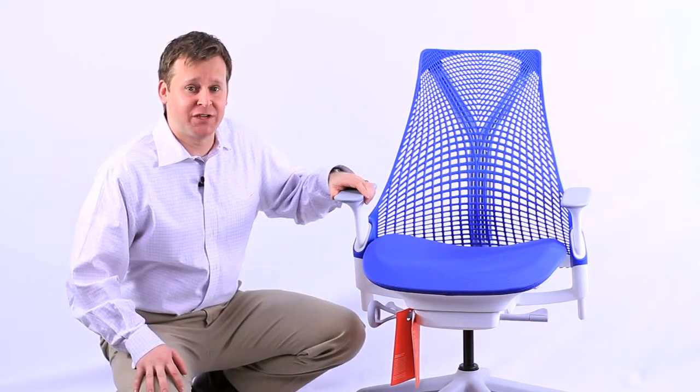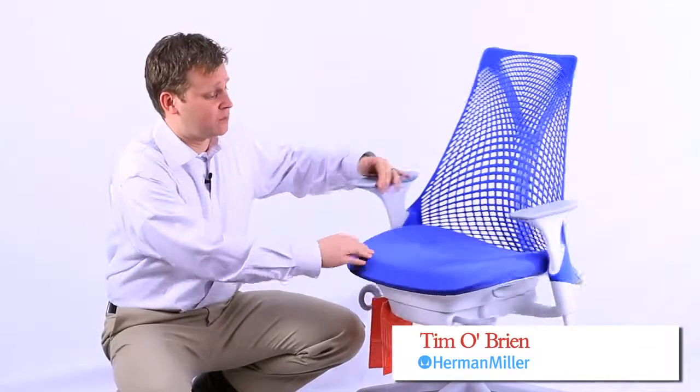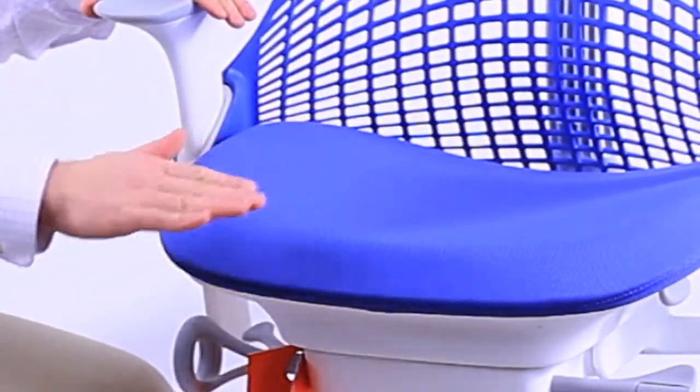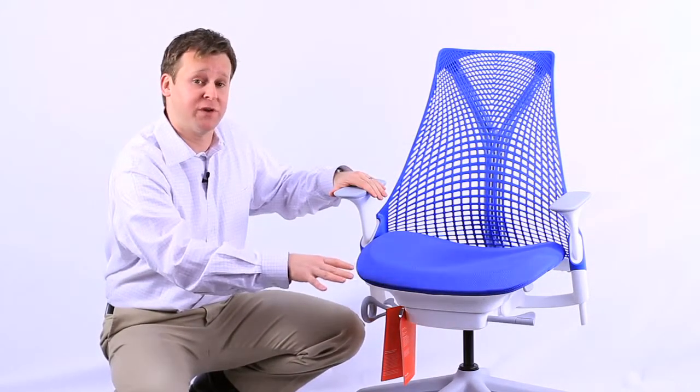Some of the ergonomic benefits of the Sail Chair reside in the seat pan as well as in the back. With the seat pan, which is adjustable, it also has a contoured edge. This allows the legs to relax, allowing better circulation and blood flow, which is very important when you're sitting for long periods of time.